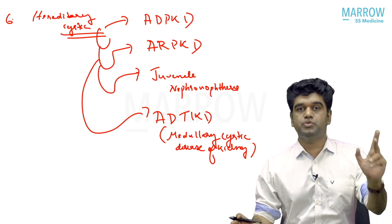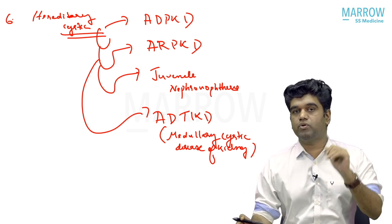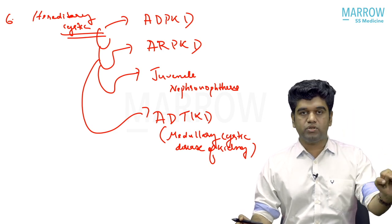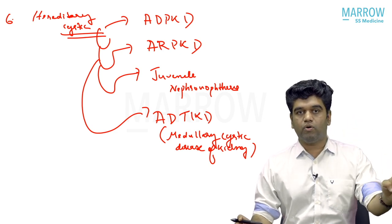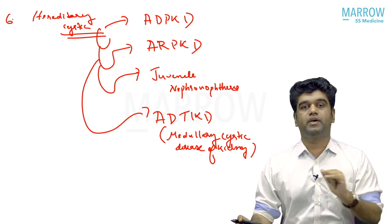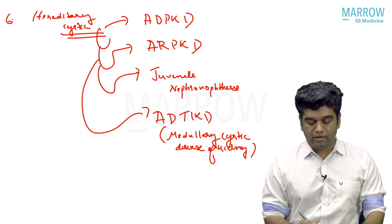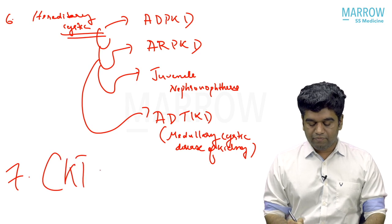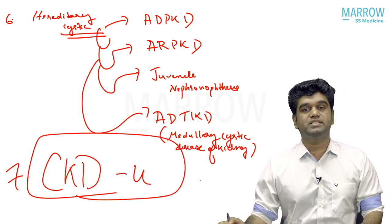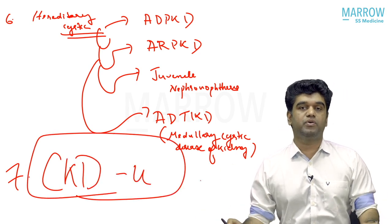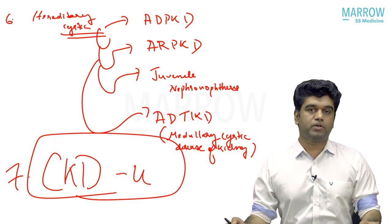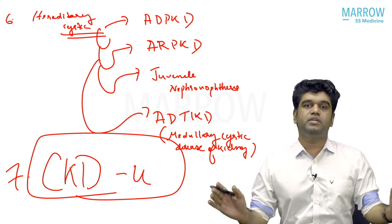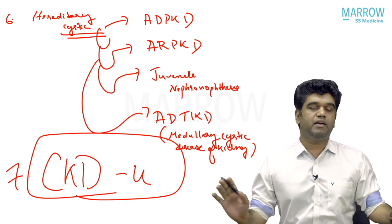So the six major causes are: drugs, toxins/heavy metals, metabolic conditions, autoimmune conditions, reflux nephropathy, and hereditary causes. Cause number seven is CKDU — CKD of unknown etiology — which is gaining a lot of importance. Outside these, additional causes include analgesic nephropathy (historical, due to phenacetin-aspirin-caffeine combination), certain infections like xanthogranulomatous pyelonephritis and malacoplakia, and chronic allograft nephropathy or post-transplant chronic rejection.